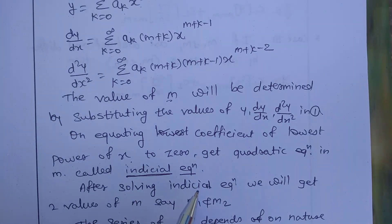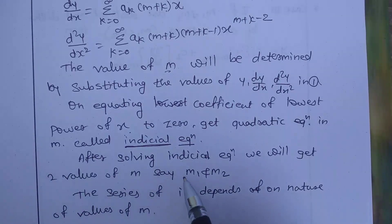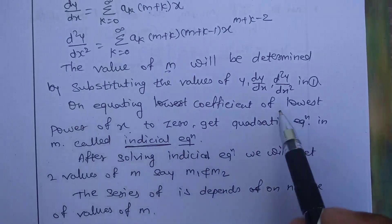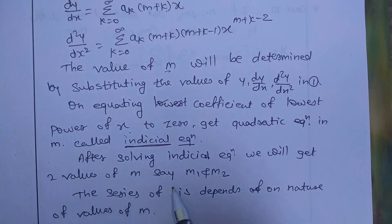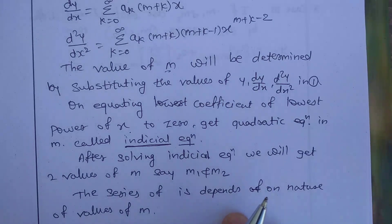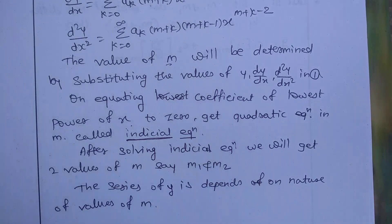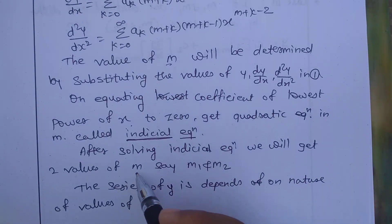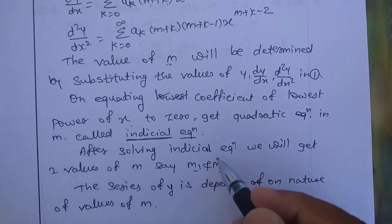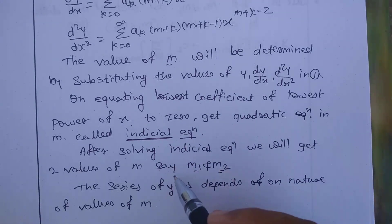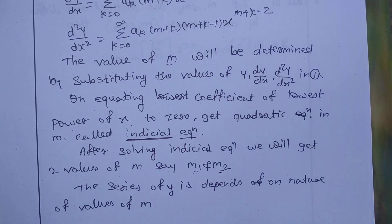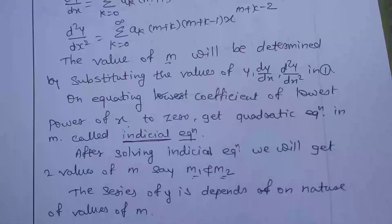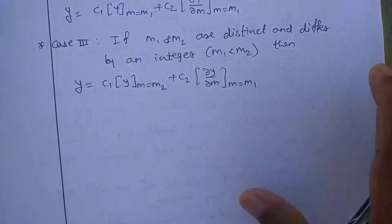After solving the indicial equation we get two values of m, called m₁ and m₂ — the two roots of the indicial equation. The series solution of y depends on the nature of these roots. Depending on the values of m₁ and m₂, there are three cases for the solution.